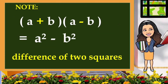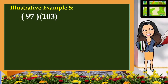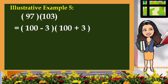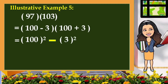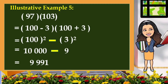Take note that the product of the sum and difference of two terms is the difference of two squares. What if I asked you to multiply 97 and 103? To solve this easily and mentally, we can apply the method from a while ago. We can rewrite 97 as 100 minus 3 and 103 as 100 plus 3. So we arrive at the product of the sum and difference of two terms. The square of 100 is 10,000, minus the square of 3 which is 9. And 10,000 minus 9 is equal to 9,991.